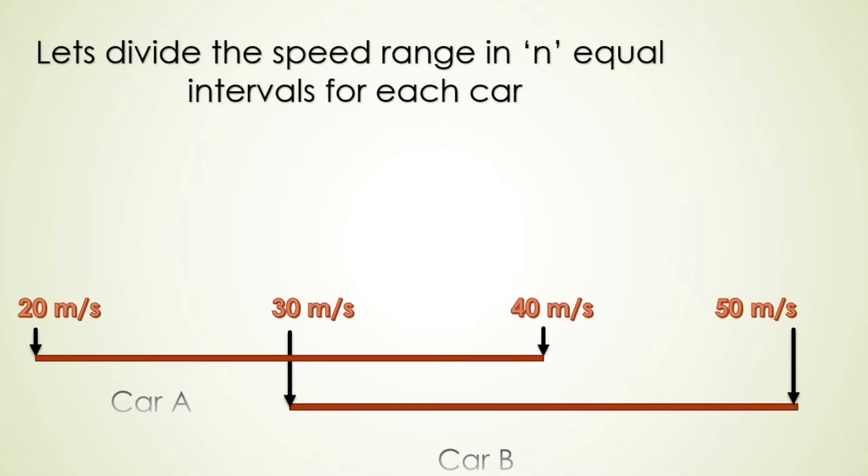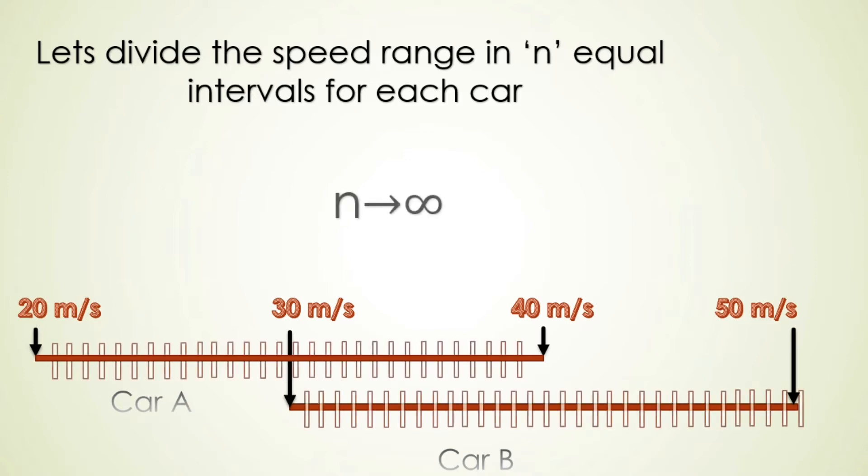So here is the solution. Let's divide the speed range in n equal intervals for each car and consider n tends to infinity. With this assumption we get only one speed in one interval.